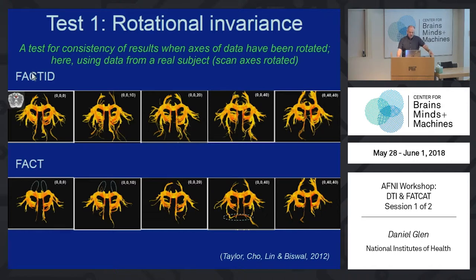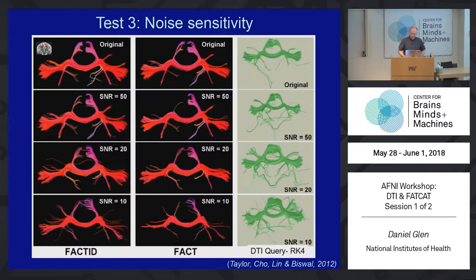With FACT-ID, if you rotate the axes — these are rotated in the scanner — you can see that FACT-ID will be more or less consistent. FACT, because it's six-voxel neighbors, will give you different results every time. FACT-ID is more robust to noise: if we have added noise onto it, the original data will look similar even with a lot more noise added, but FACT is a lot more sensitive to that.